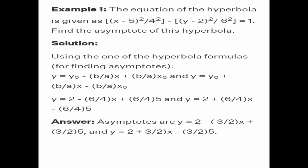Substituting the values where x₀ = 5, y₀ = 2, b = 6, and a = 4: y equals 2 minus (6/4)x plus (6/4)(5), and y equals 2 plus (6/4)x minus (6/4)(5). Therefore the asymptotes are y equals 2 minus (3/2)x plus (3/2)(5), and y equals 2 plus (3/2)x minus (3/2)(5).